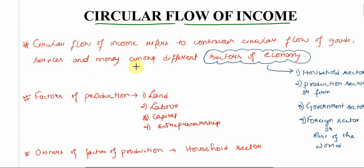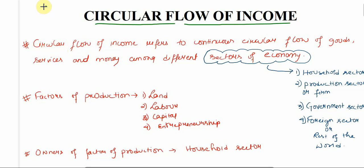Let us first go to the meaning of circular flow of income. Circular flow of income refers to the continuous circular flow of goods, services, and money among different sectors of the economy. The word 'circular' refers to a fixed mechanism that keeps on going — we start at a point, go through some activities, and again come back to the same point.